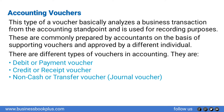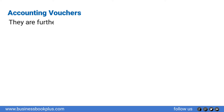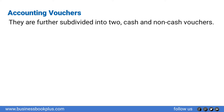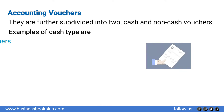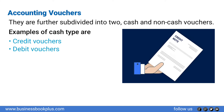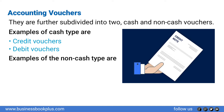Non-cash or transfer voucher, that is journal voucher, and supporting voucher. They are further subdivided into two categories: cash and non-cash vouchers. Examples of cash types are credit vouchers and debit vouchers. Examples of non-cash types are debit note, credit note, and invoices.